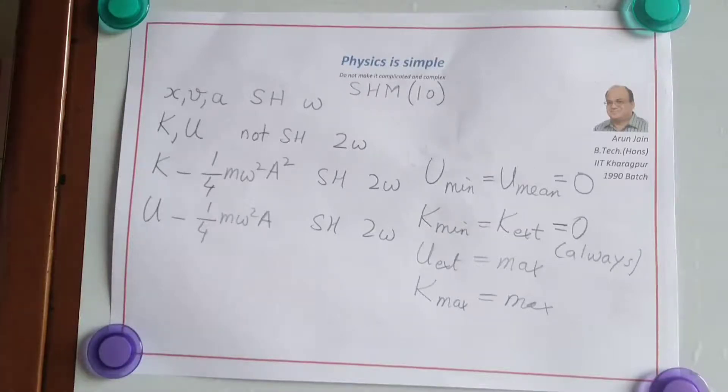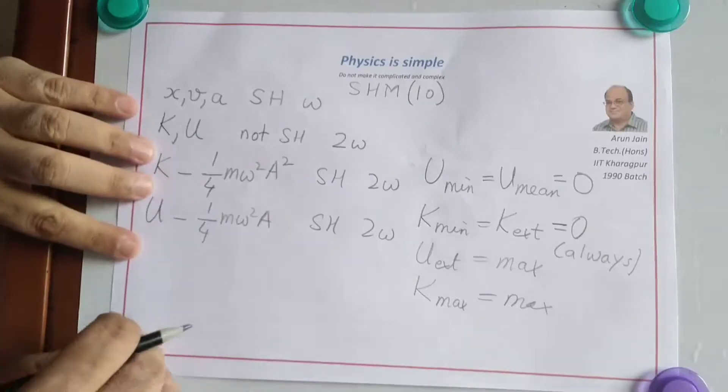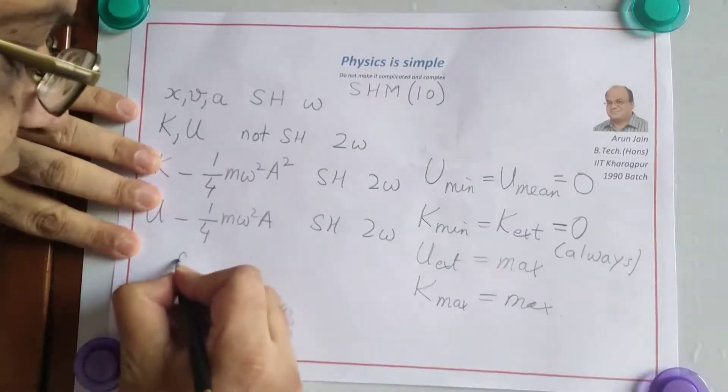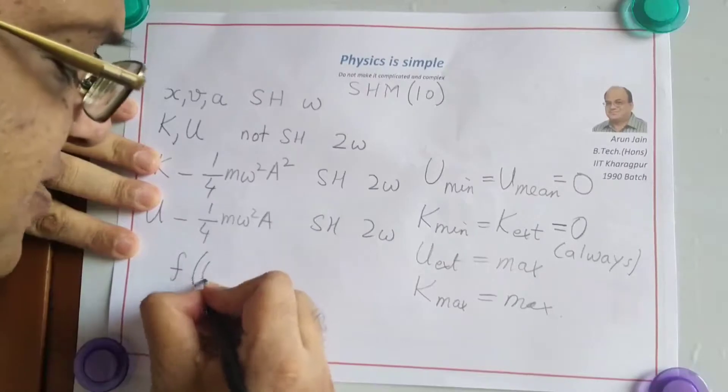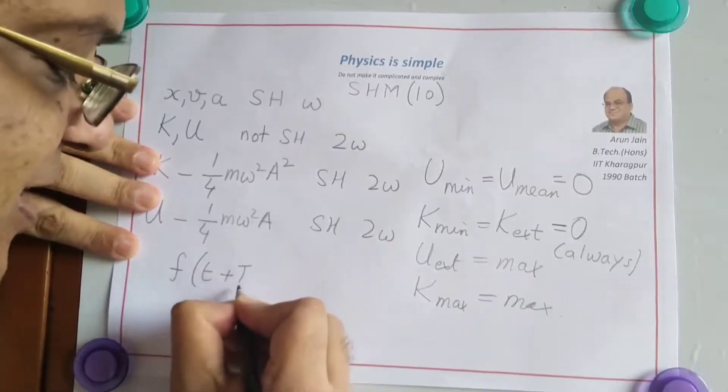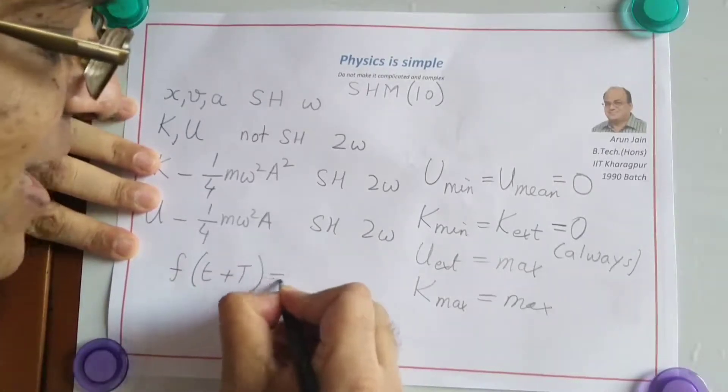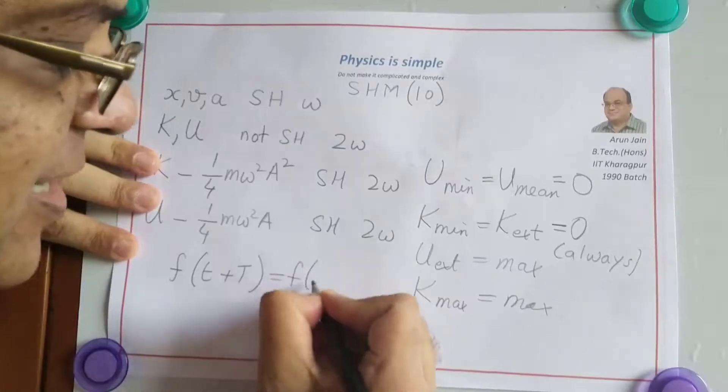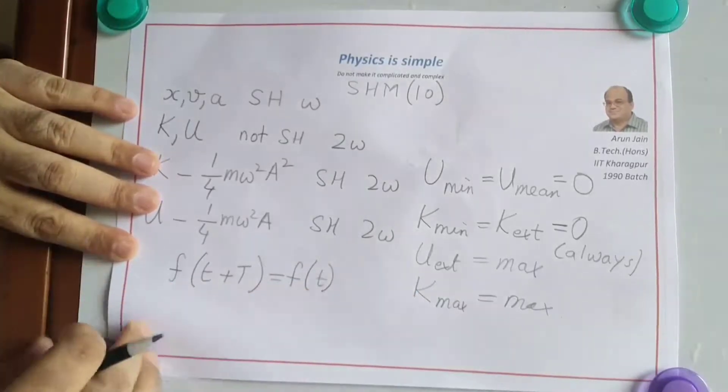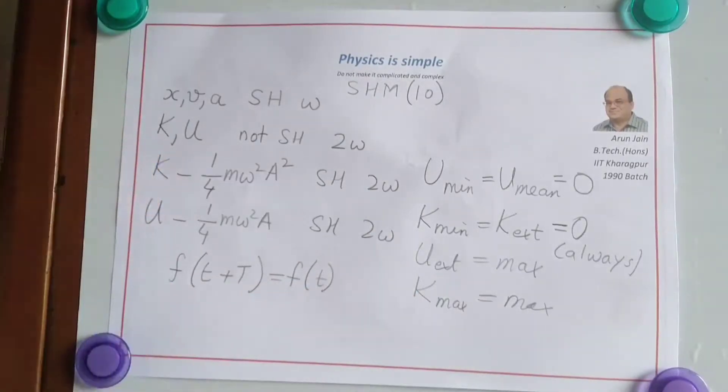Any function of time is said to be periodic. If F at T plus T, where T is the time period, is same as F at T, then we say this function is periodic and its time period is capital T.